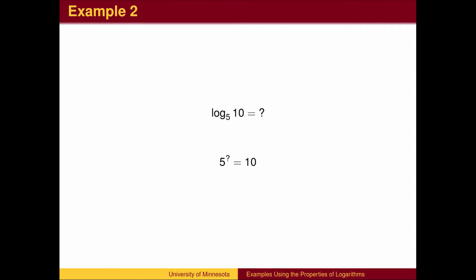since 5 to the first is 5, and that the answer is smaller than 2, since 5 squared is 25. What is the exponent you put on 5 to get the square root of 5? Recall that fractional exponents are roots, so this exponent should be one-half.